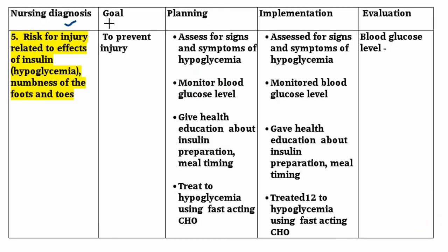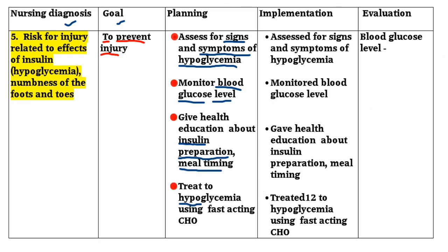Nursing Diagnosis No. 5: Risk for injury related to effects of insulin and numbness. Goal: to prevent injury. Planning and Implementation: assess for signs and symptoms of hypoglycemia, monitor blood glucose levels, give health education about insulin preparation and meal timing, and treat hypoglycemia using fast-acting carbohydrates.